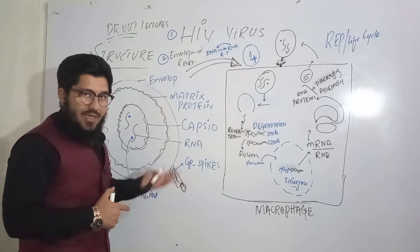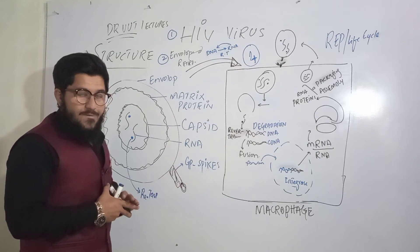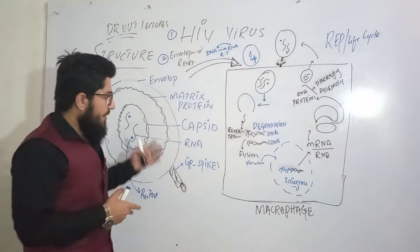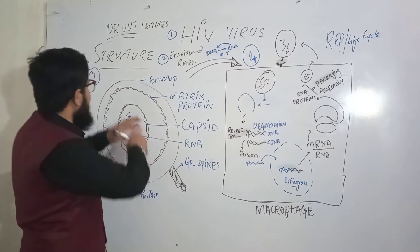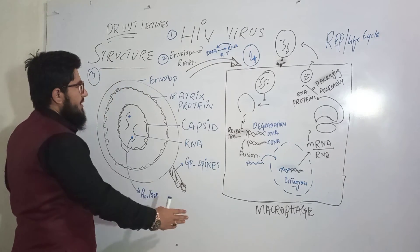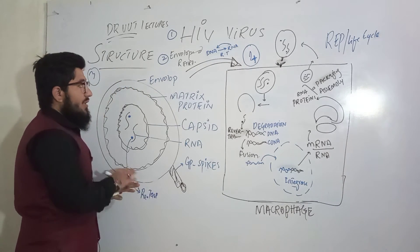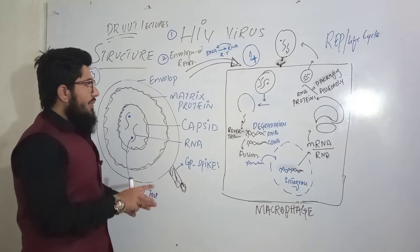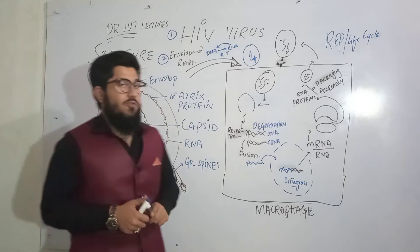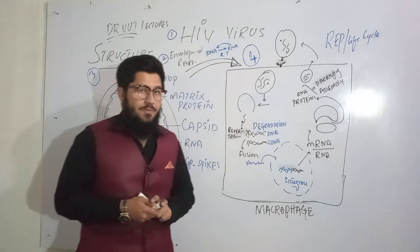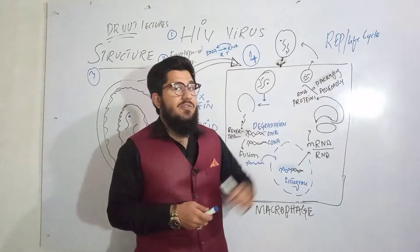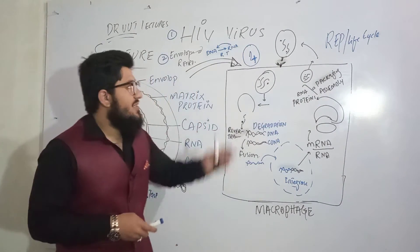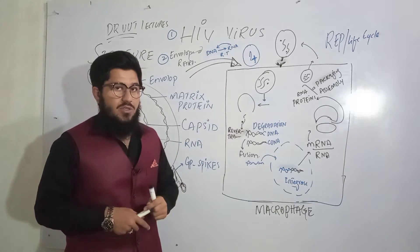GP spikes are a protein named glycoprotein. With that, the third point — the structure — is cleared and covered. Now let's move to the fourth point: the replication or life cycle of this HIV virus.